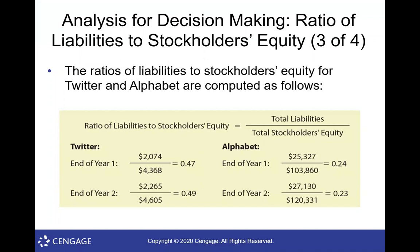Here's an example using Twitter and Alphabet — who owns Google. Twitter's liabilities to stockholders' equity ratio is 0.47, and Alphabet's is 0.24. We can quickly say Google has a lot less debt relative to its stockholders' equity than Twitter. There's a major difference in the size of those two companies, but using these ratios helps us look past size and just say, as a percentage of liability to equity, who's stronger? We use that a lot when making investment decisions.